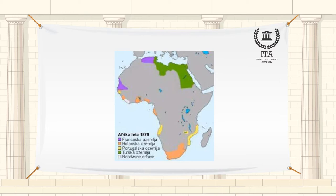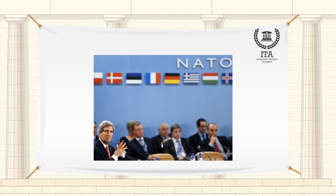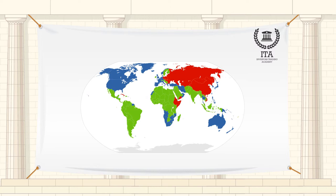A third world country is a country whose views are not aligned with NATO and capitalism, or the Soviet Union and communism. The use of the term third world started during the Cold War and was used to identify which of three categories the countries of the world aligned with.